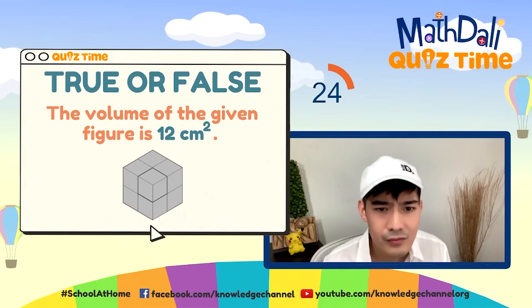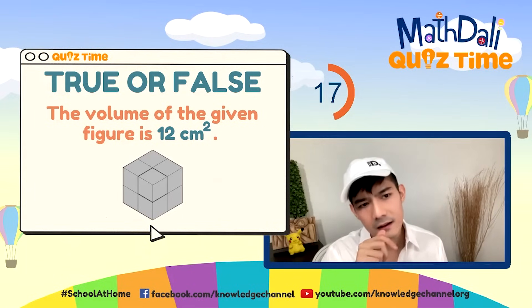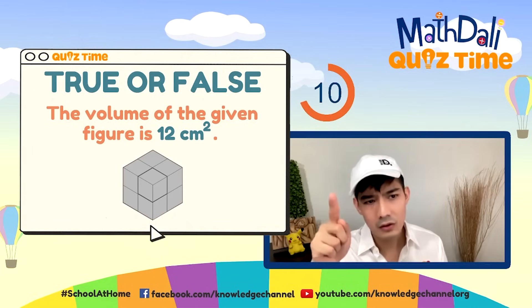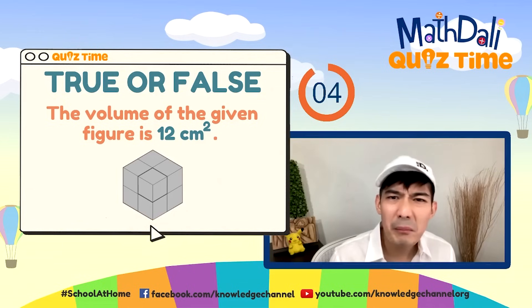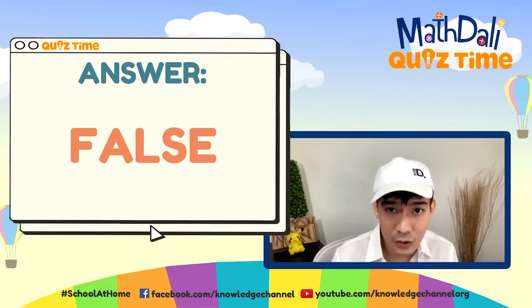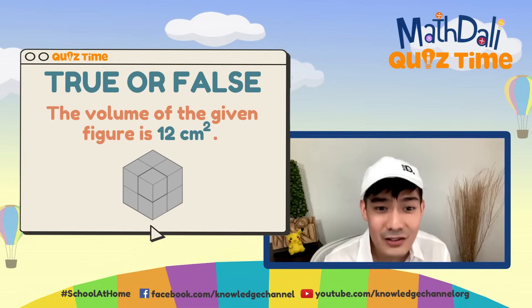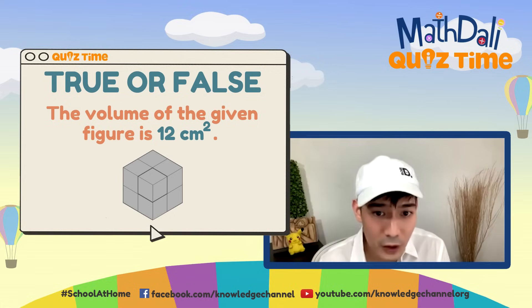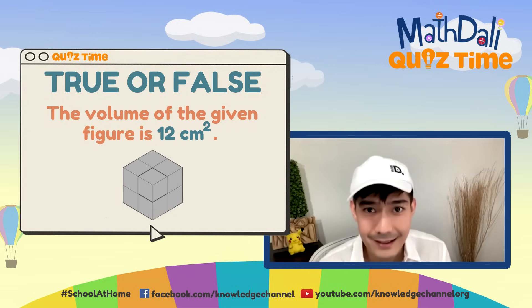Kailangan nga natin... 1, 2, 3, 4, 5, 6, 7, 8. Hmm. 1, 2, 3, 4 — length. Side times side times side. Ilan yun? 12 ba yun? The correct answer is False. Dahil ang volume ng figure na ito ay 8 cubic centimeters. Bilangin natin: 1, 2, 3, 4, 5, 6, 7, 8. It's not 12. Since ito ay volume, dapat cubic units — or in this case, cubic centimeters — ang kailangang gamitin natin.